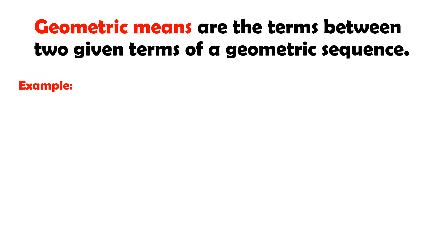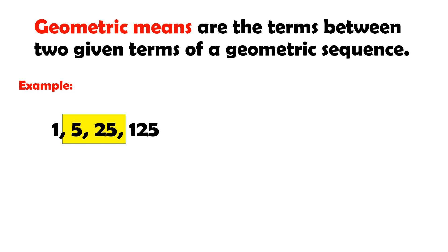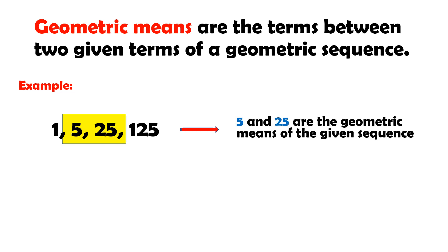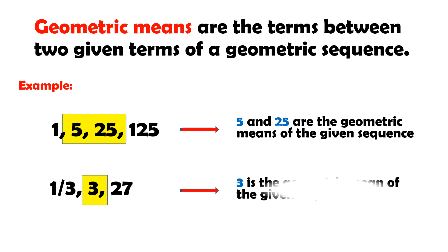For example, in the sequence 1, 5, 25, and 125, the 5 and 25 are what we call geometric means because they are between 1 and 125. Another example: in 1/3, 3, and 27, the number 3 is the geometric mean because it is between 1/3 and 27.